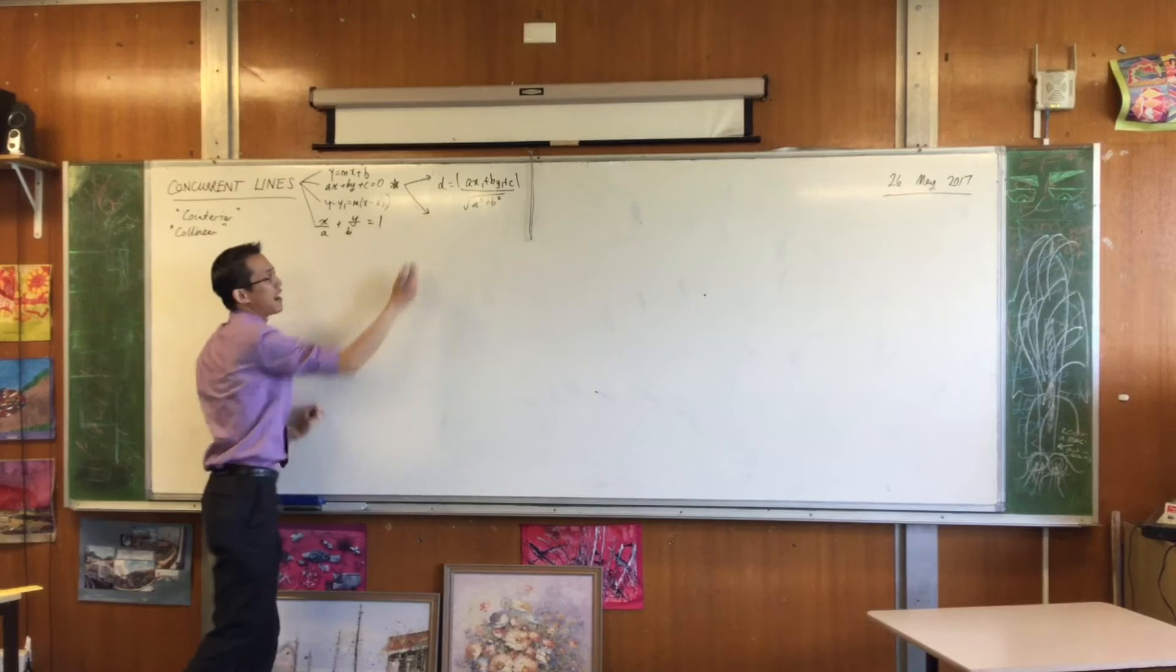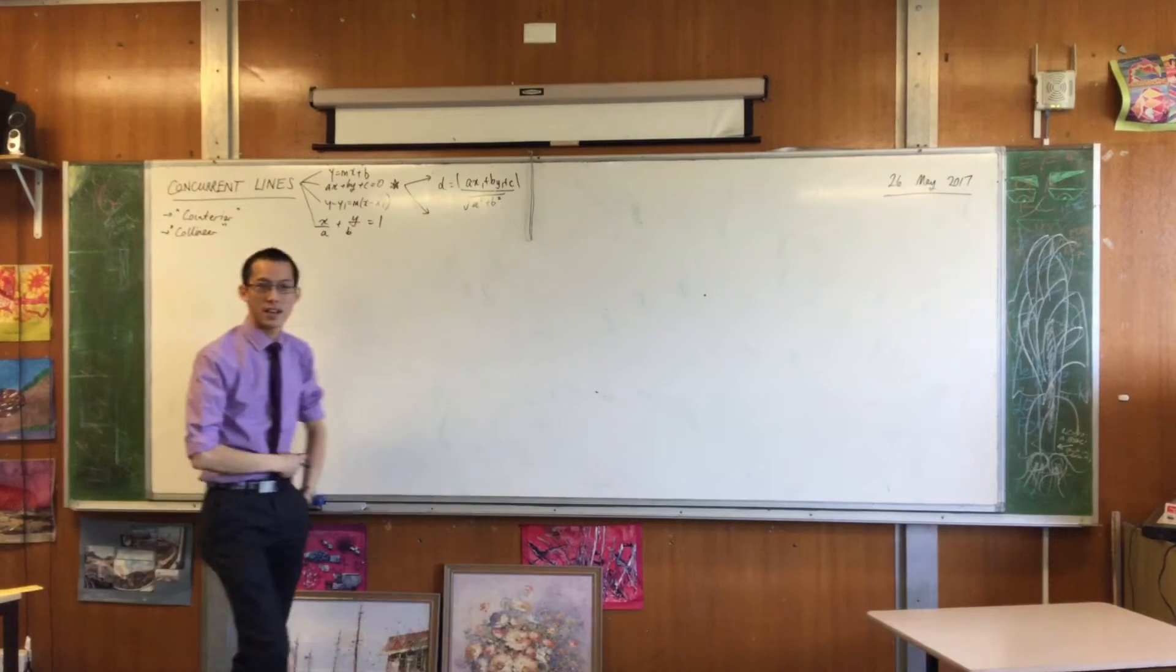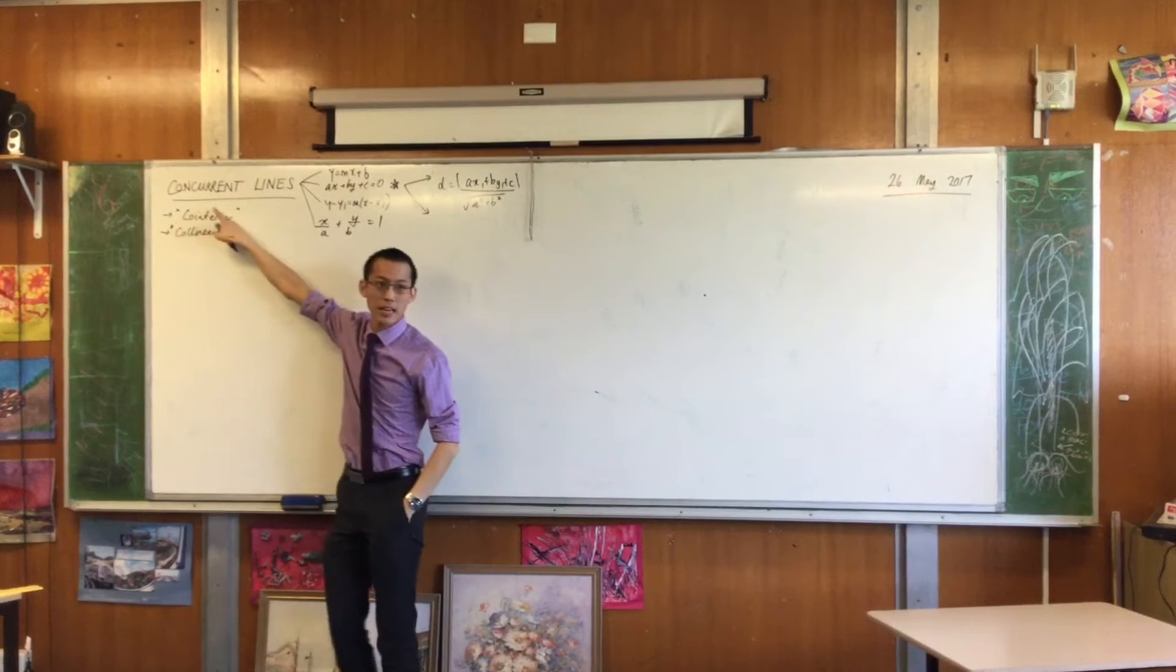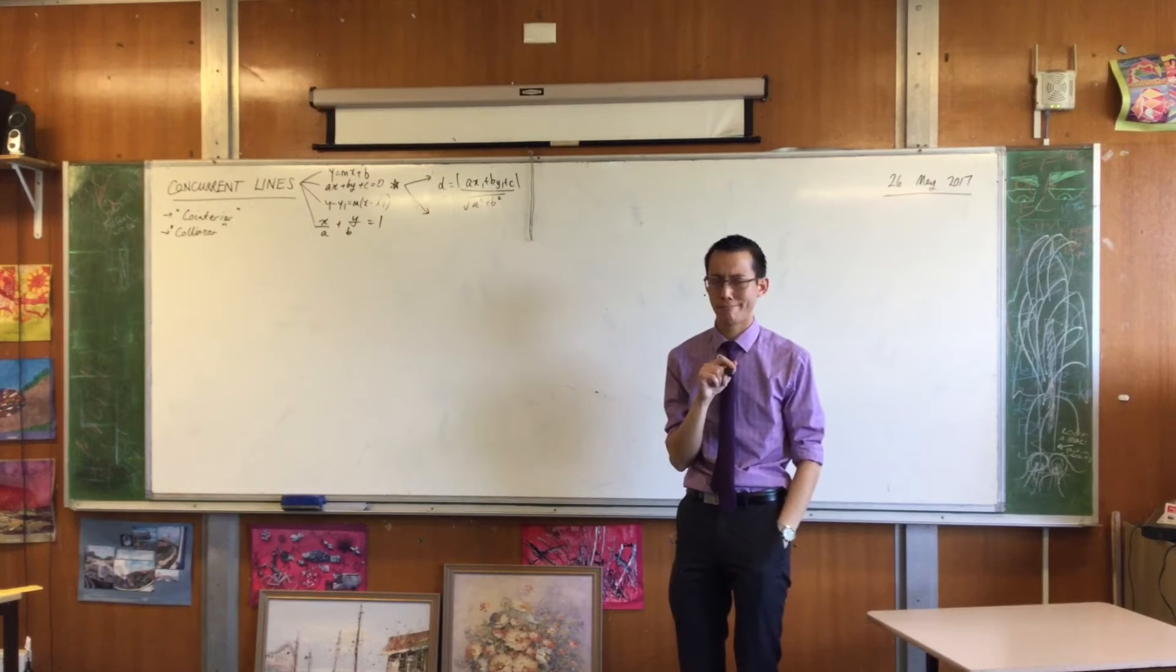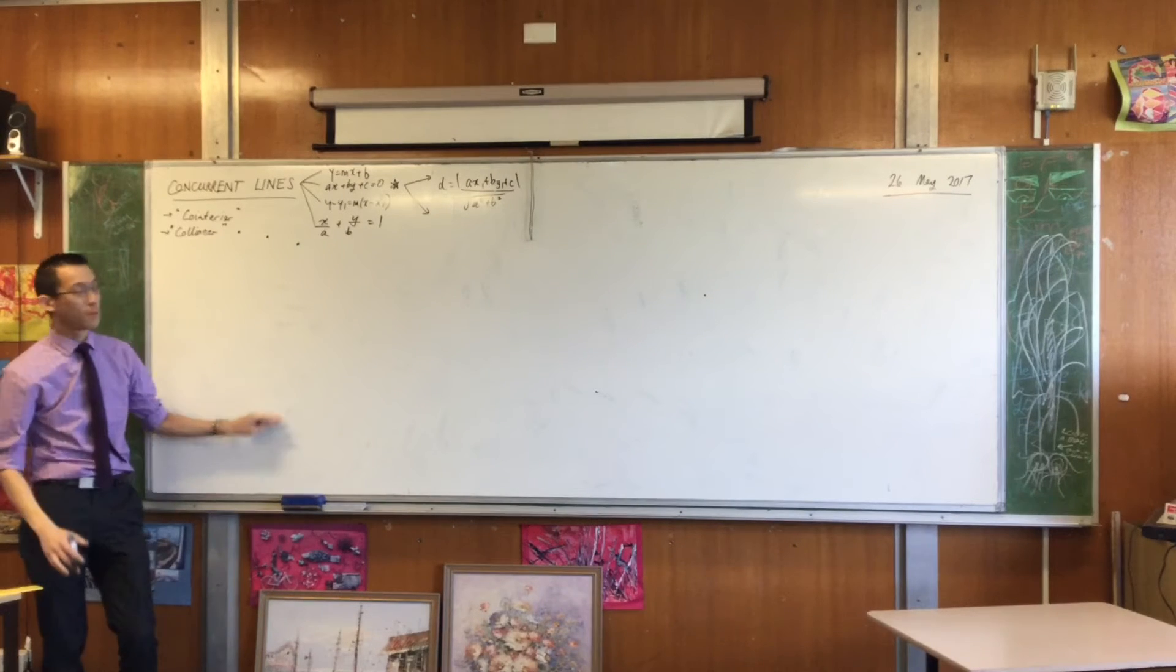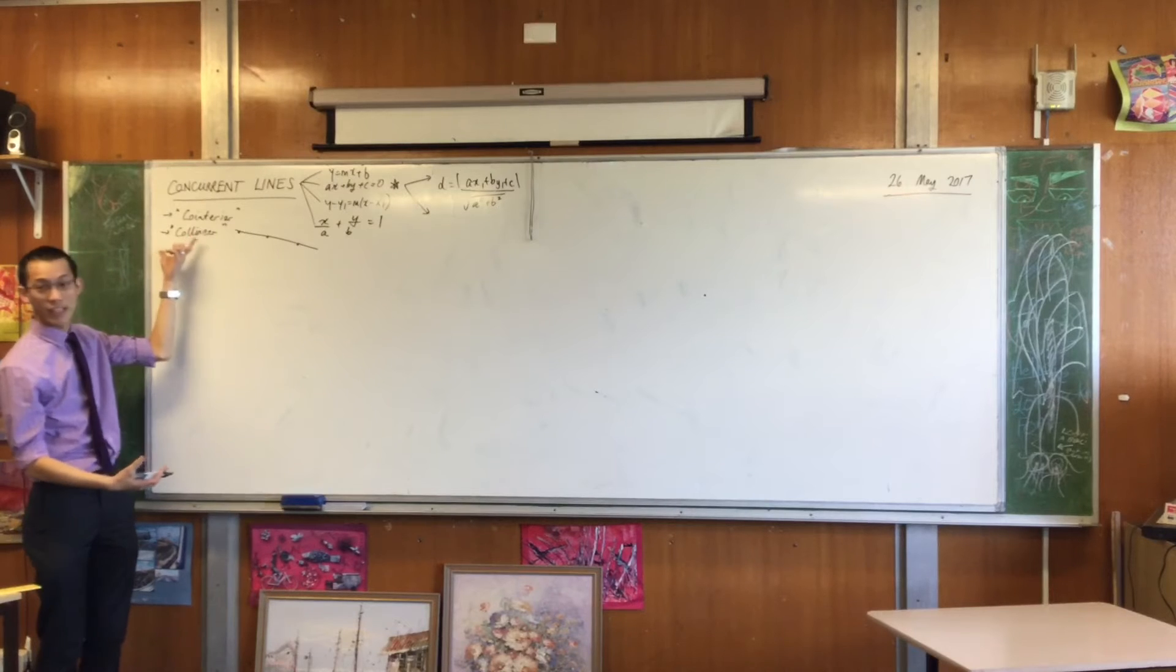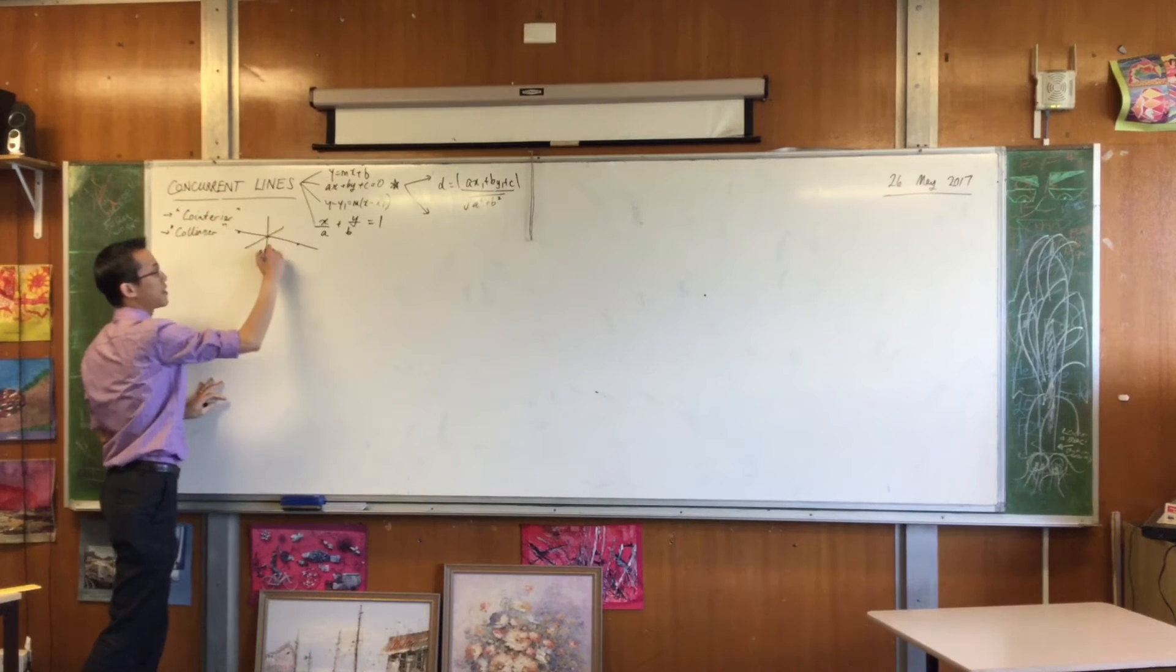Today we're going to go on to another idea that requires the general form, and it's this heading: concurrent lines. I want you to remember what do these words mean. What does it mean when two angles are co-interior? They're together between a pair of parallel lines, both together on the inside. What about collinear? If you have three points and they all exist on the same straight line, we call that collinear, together on the line. So concurrent, when it refers to lines, is when you've got a bunch of lines and they are all together at a single point.